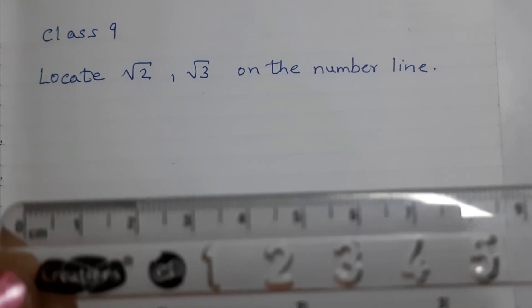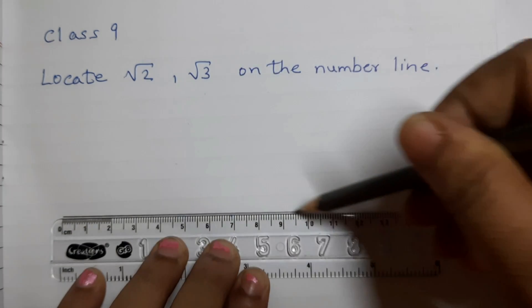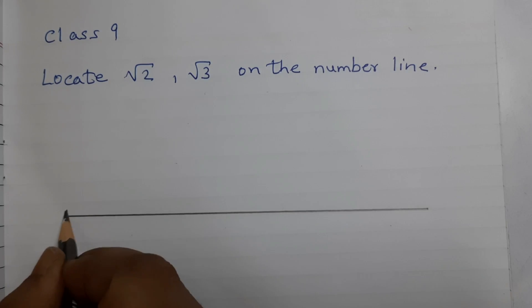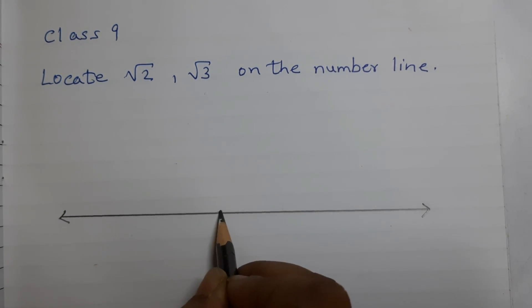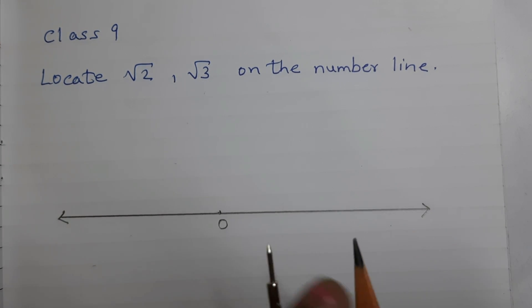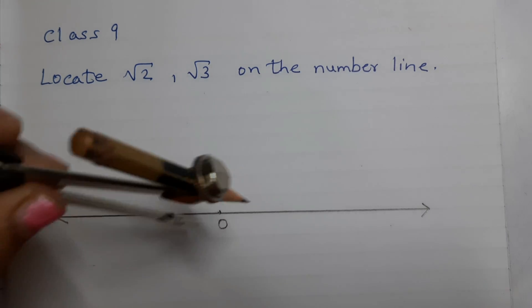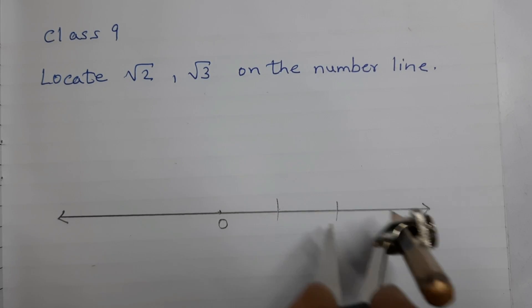First take a ruler and draw a line. Mark a point 0. Take a compass and then take any measurement and that would be the unit length. I have taken this much length and I am going to cut arcs. 1, 2, 3.